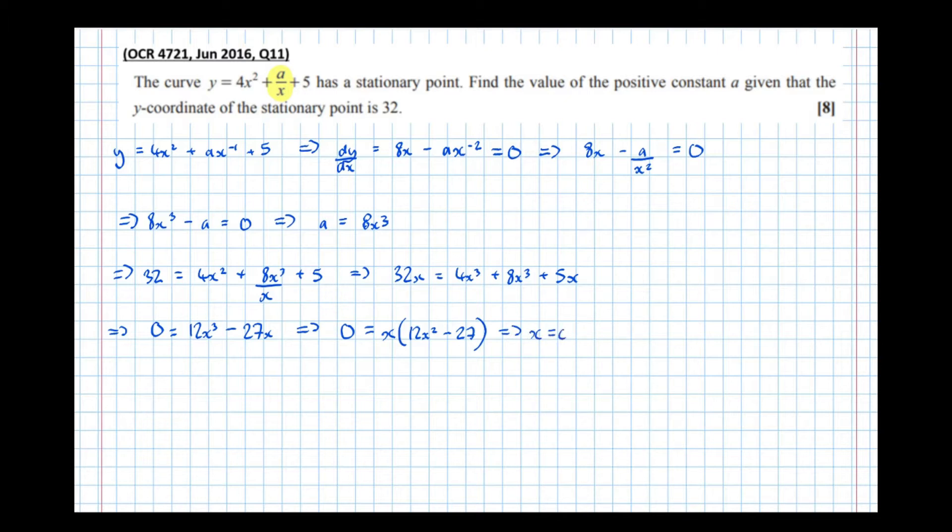Which means that x = 0, or 12x² - 27 = 0.